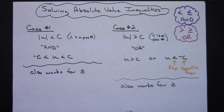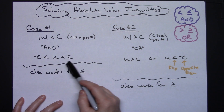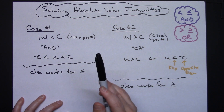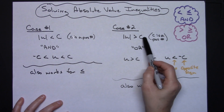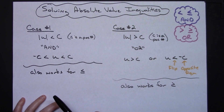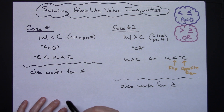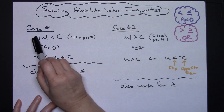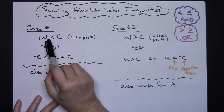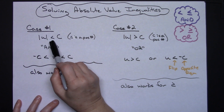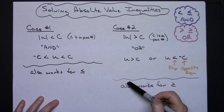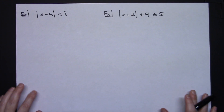These two cases need to be memorized — less than is an AND, greater than is an OR — and remember how to set each one up. Also keep in mind this works when the constant C is positive, and the absolute value bars must be isolated before applying these rules. Nothing can be multiplied in front or added or subtracted on the other side.